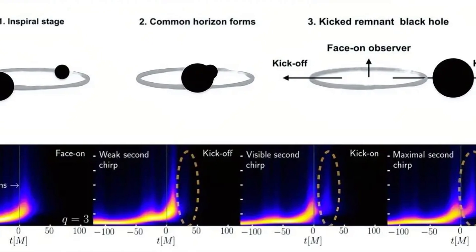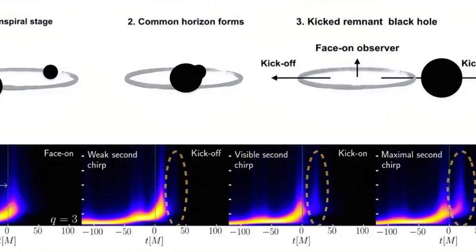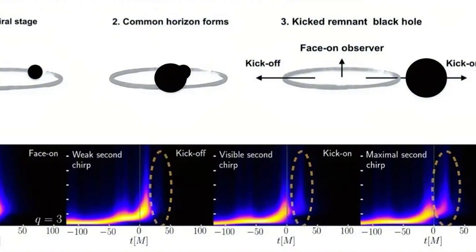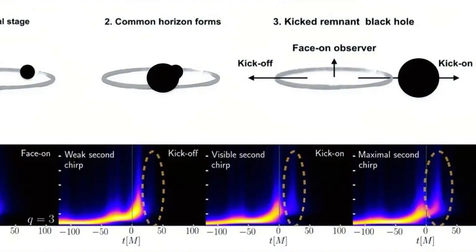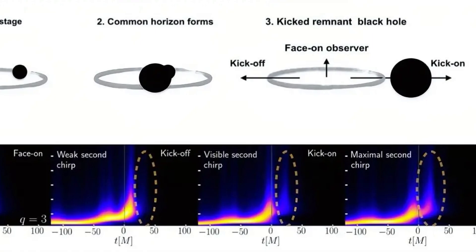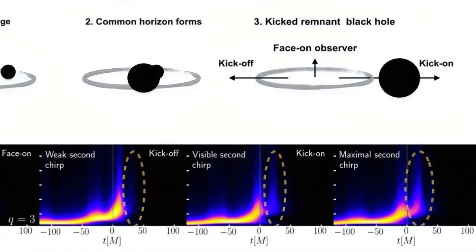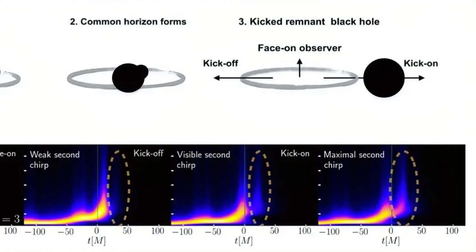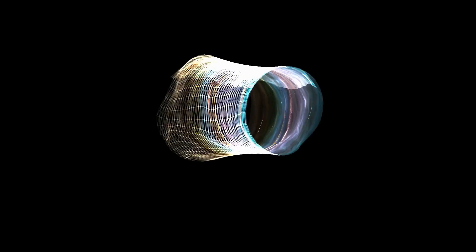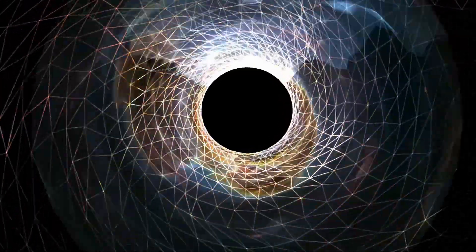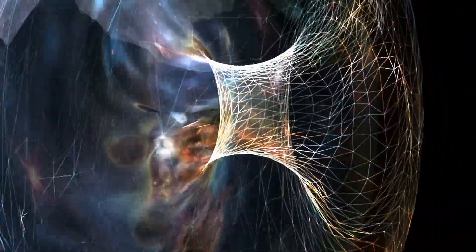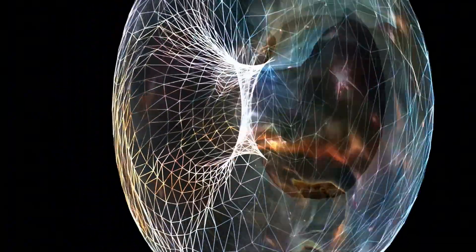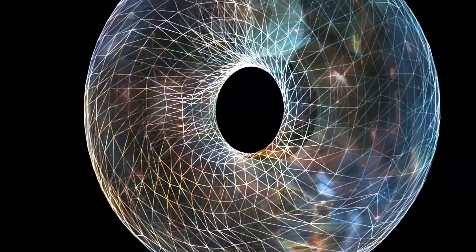The ringdown is the after-echo, the sound of the new, larger, now unified black hole settling into its final form, vibrating like a perfectly struck bell. This ringdown is the definitive proof that a new object has formed in our reality. The ghost signal was missing its ringdown. It had the violent crash of the merger, but then, silence. It was abruptly, cleanly cut off.